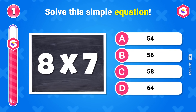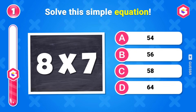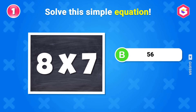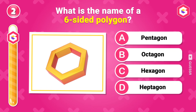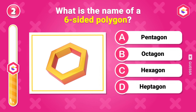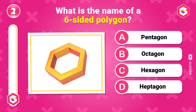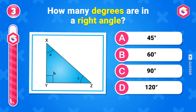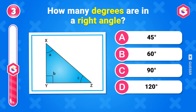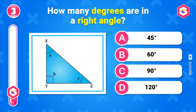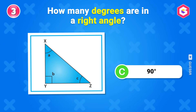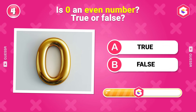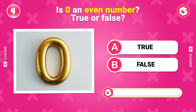Solve this simple equation. What is the name of a six-sided polygon? Hexagon. How many degrees are in a right angle? 90 degrees. Is zero an even number? True or false? True.